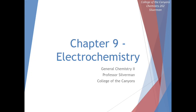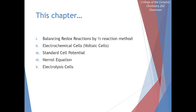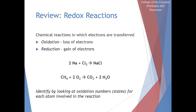Hello and welcome in. We're in a new chapter here, chapter 9 on electrochemistry. In this chapter, we'll do a quick review on redox reactions, and then we'll introduce electrochemical cells, specifically voltaic cells. Let's start with a review of redox reactions.